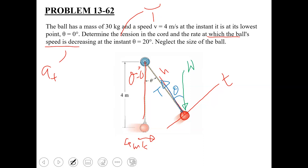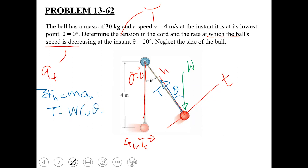Applying the equation summation Fn equals m·an. The forces acting along the normal axis are tension and the component of weight, mg·cosθ. Since weight's component opposes the positive normal direction, we get: T minus W·cosθ equals m·v² over r. This is equation number one.